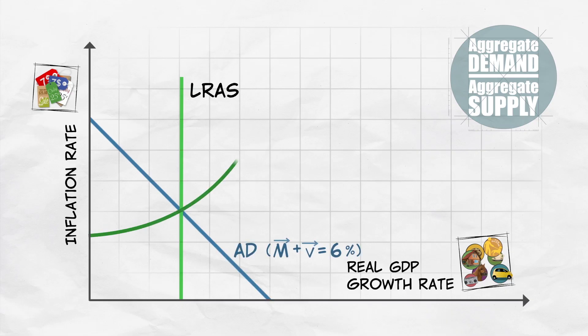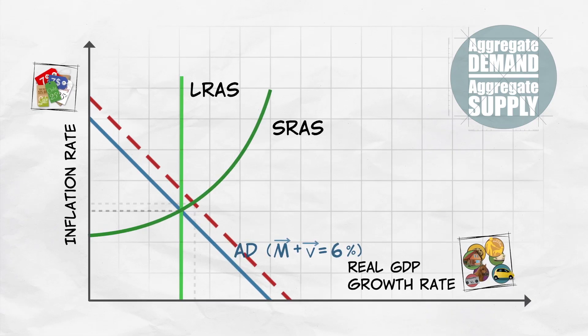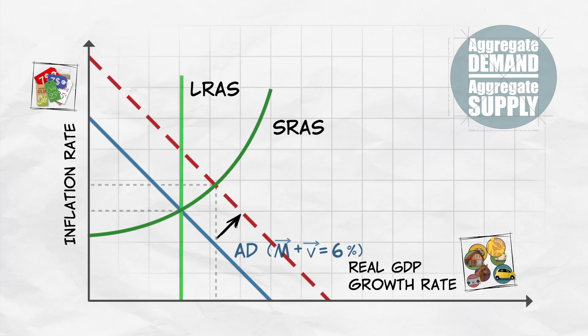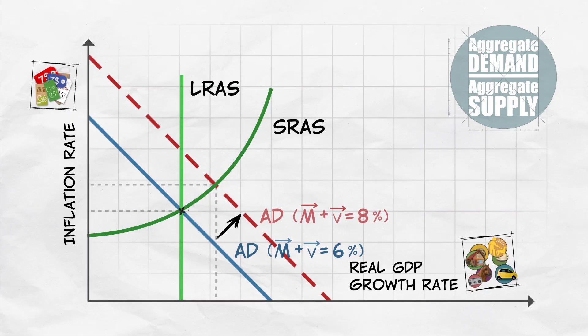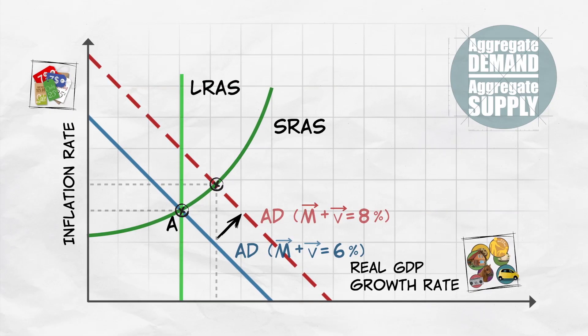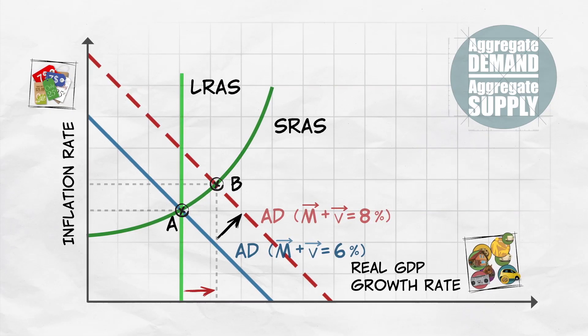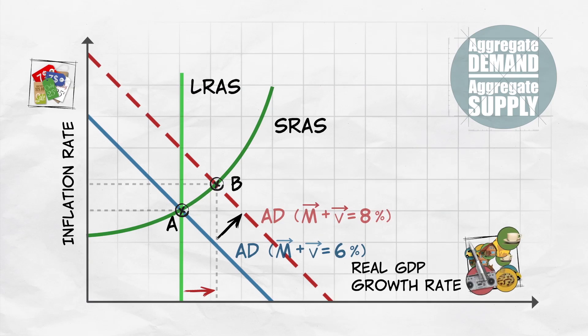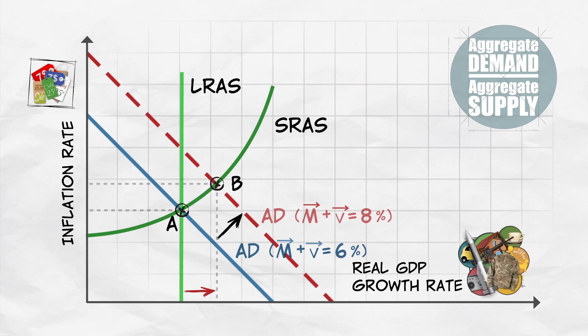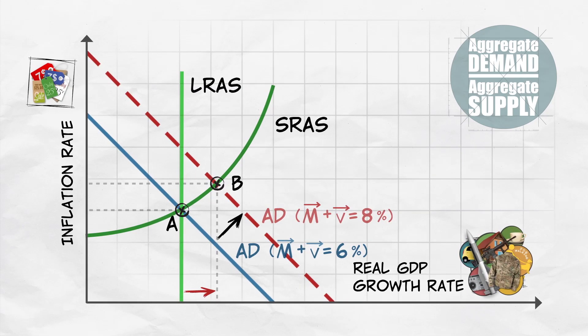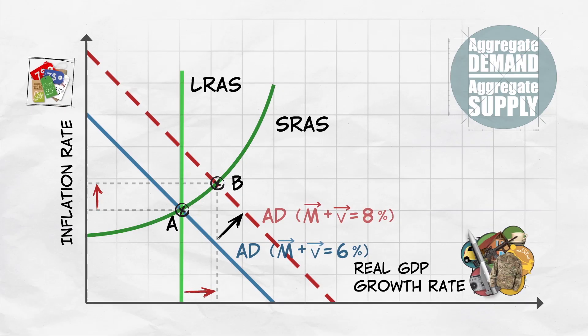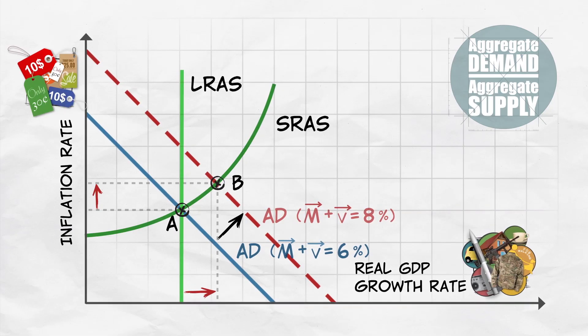For example, suppose that the government starts spending a lot more — say a big increase in defense spending. The increase in spending shifts out the aggregate demand curve. So in the short run, the economy moves from point A to point B, creating a higher growth rate — a boom from all that defense spending — and also a higher inflation rate as that spending pushes up prices.